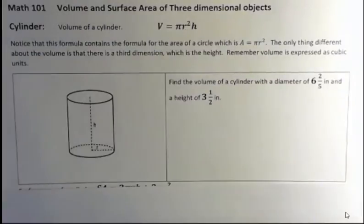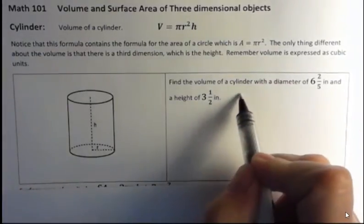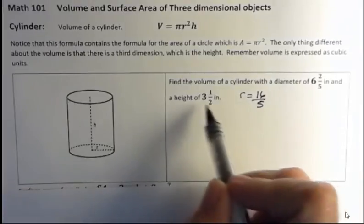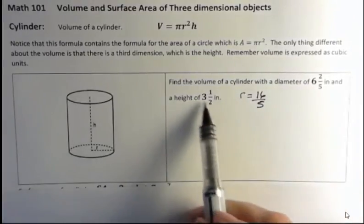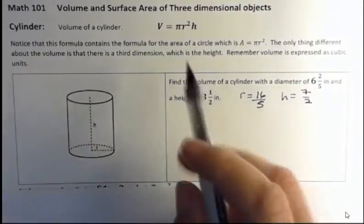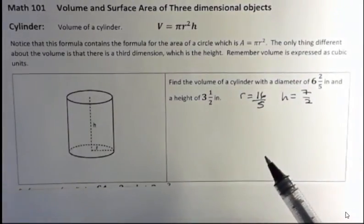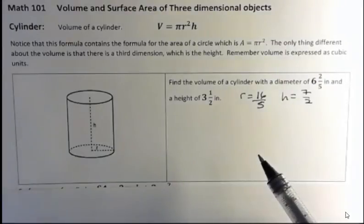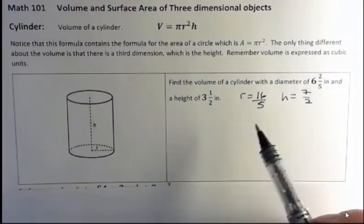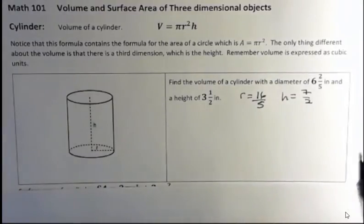So our radius is 16-fifths and our height is seven halves. And I'm going to use for pi, what I was finding when I was using the computer program is that they did not like 3.14. So you have to either use the pi button on your calculator or just go a little further out. I'm going to use the pi button on my calculator, which most calculators have.